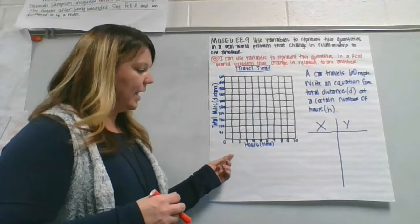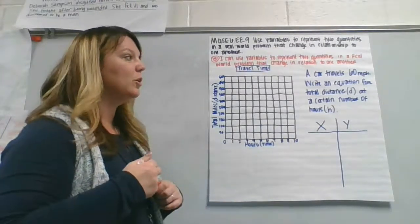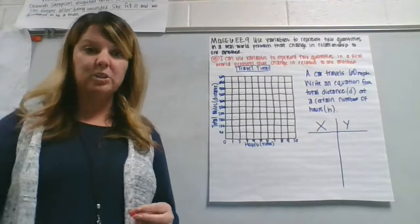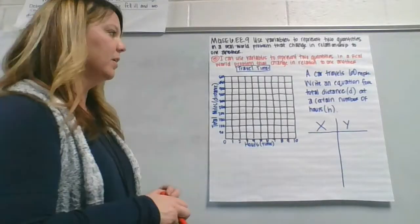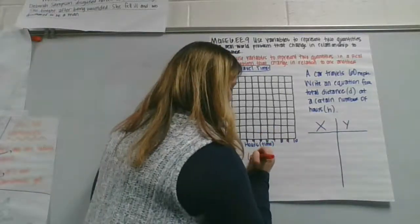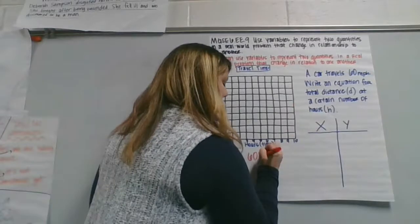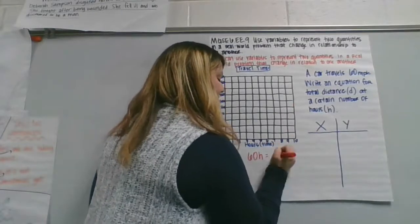So basically we're traveling at 60 miles per hour. So we're going to have 60 miles per hour times however many hours we're traveling is going to give us d.